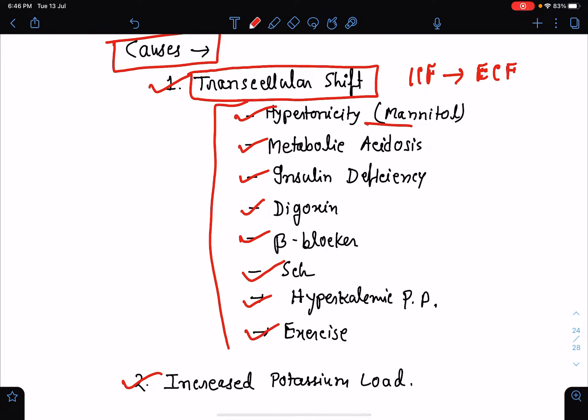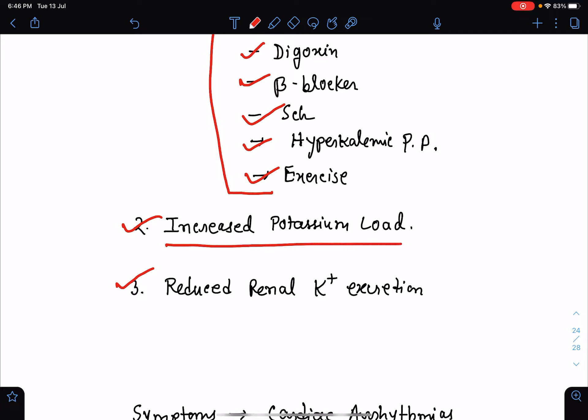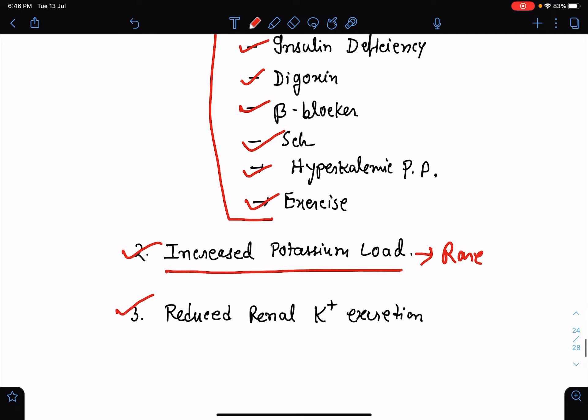Increased potassium load rarely results in sustained hyperkalemia unless it is associated with some other precipitating factors for hyperkalemia. Reduced renal potassium excretion is probably the most important cause of hyperkalemia.